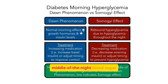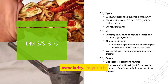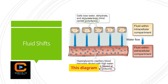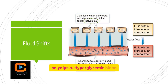A middle-of-the-night blood sugar check can help differentiate between the two. The three Ps of diabetes are polydipsia, polyuria, and polyphagia. Polydipsia is increased thirst due to high blood glucose increasing plasma osmolarity. Polyuria is increased urination related to increased thirst and osmotic diuresis. Polyphagia is excessive hunger because glucose isn't utilized effectively. This diagram illustrates the fluid shifts that occur in hyperglycemia: cells lose water, stimulating the thirst center and leading to polydipsia. Hyperglycemic blood is filtered at the kidney, resulting in polyuria.